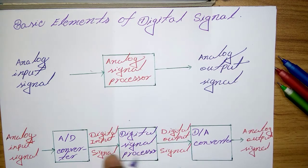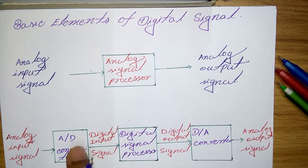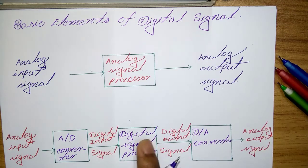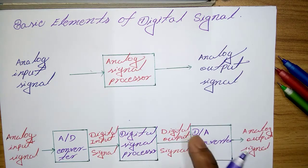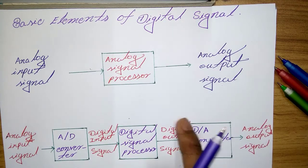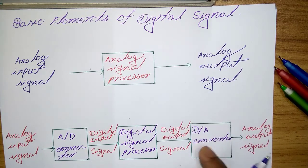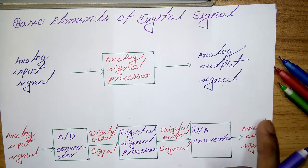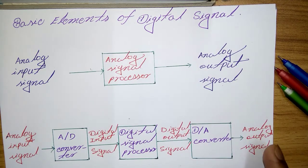After conversion, we have a digital signal which enters the digital signal processor. After processing, we get a digital output signal. This digital output signal is then converted by a Digital-to-Analog Converter, or DAC, which produces an analog output signal.